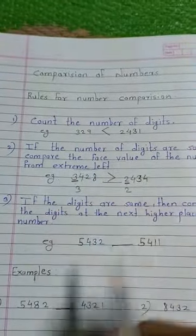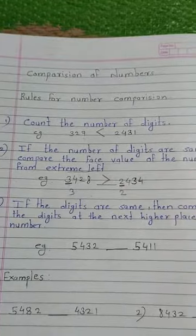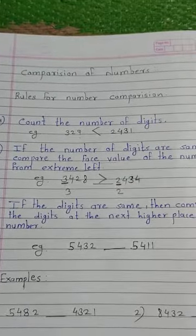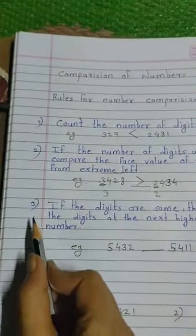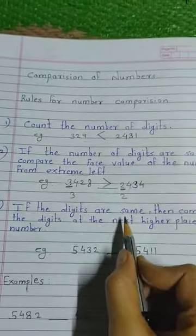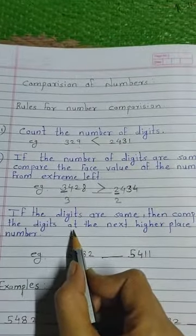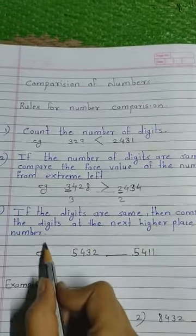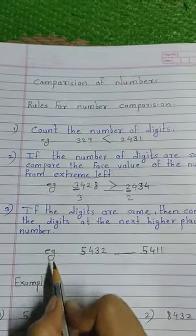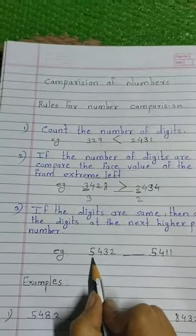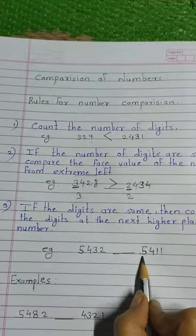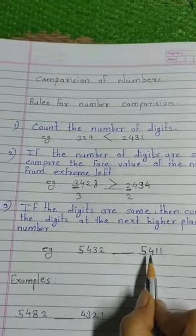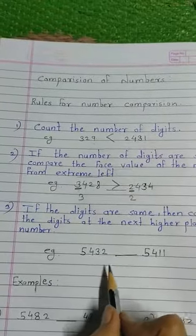So rule one is count the number of digits; rule two is if the number of digits are same, compare the face value from extreme left. The third rule is: if the digits are same, then compare the digits at the next higher place. For example: 5432 compared to 5411 — find which one is bigger.